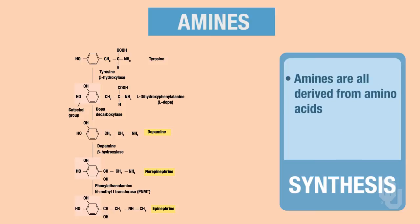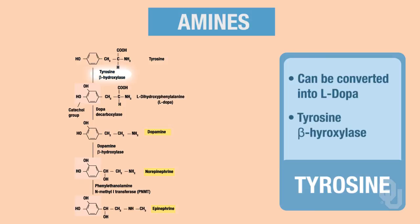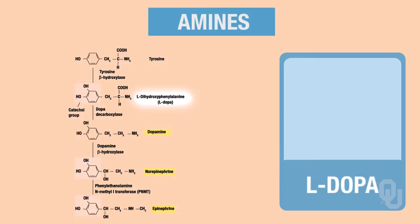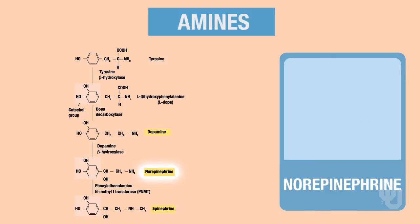Remember that amines are all derived from amino acids. In this case, we'll use tyrosine as our amino acid. Tyrosine can get converted into L-DOPA via an enzyme called tyrosine beta-hydroxylase. Then another enzyme-catalyzed reaction using DOPA decarboxylase produces the ligand dopamine. Another enzyme-catalyzed reaction using dopamine beta-hydroxylase produces norepinephrine, and lastly, another reaction using the enzyme PNMT produces the ligand epinephrine.